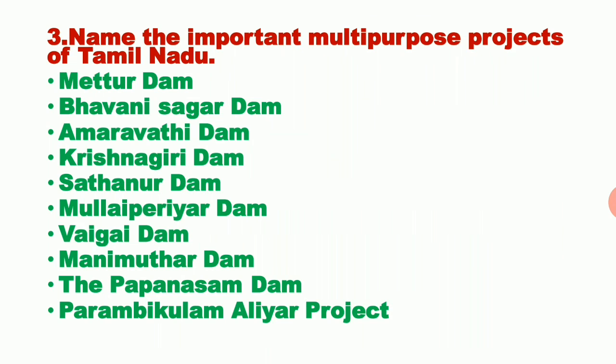Third question: name the important multi-purpose projects of Tamil Nadu. Multi-purpose projects are constructed for many purposes like agriculture, tourism, fishing, etc. The biggest multi-purpose project in Tamil Nadu is Mettur Dam, constructed across the river Cauvery in Salem district. Its another name is Stanley Dam. Second is Bhavani Sagar Dam, constructed across Bhavani River in Erode. Next is Amaravati Dam, constructed across river Amaravati in Tirupur. Next is Krishnagiri Dam, constructed across the river in Krishnagiri district.